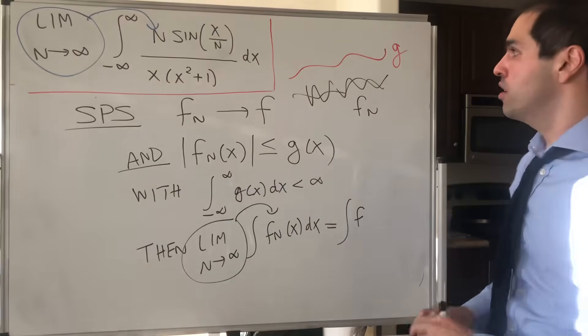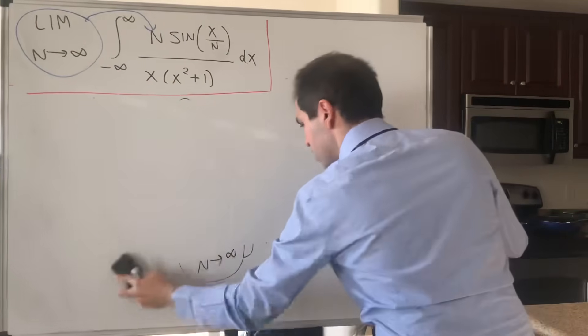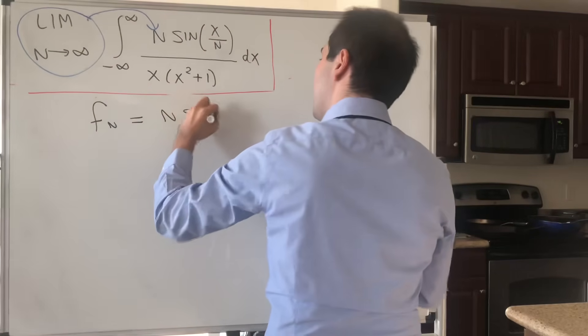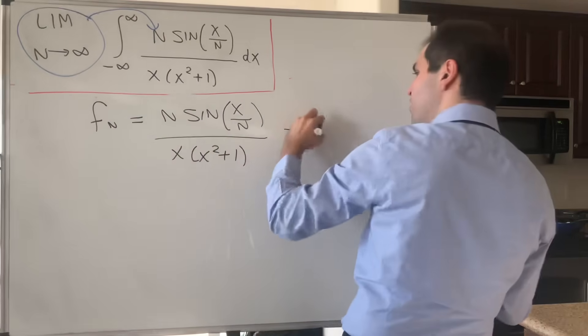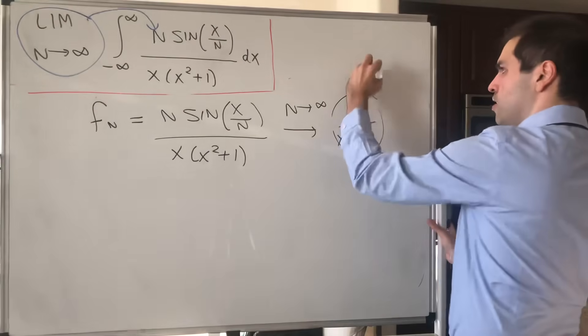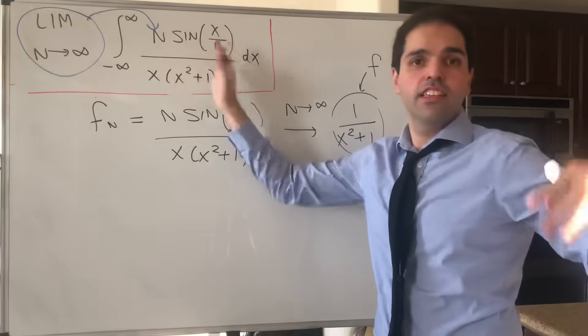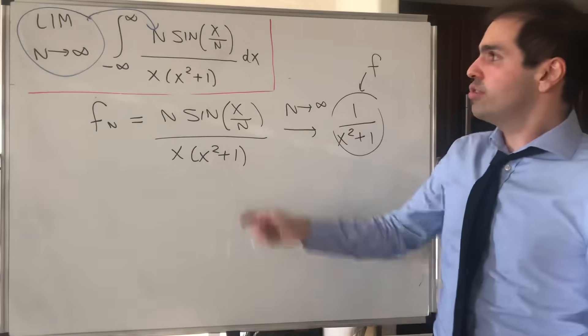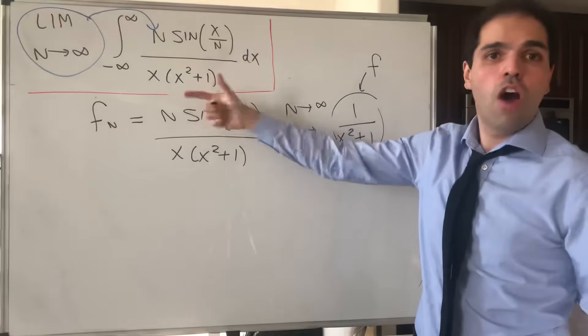And the beautiful thing is, we've done most of the work, because what have we found? We found this fn, which is n times sine of x over n, over x times x squared plus 1. We found that, pointwise, it converges to 1 over x squared plus 1. So that is your function f. And we cheated a little bit. We calculated the integral of the limit. We found it to be pi. So the only thing we still need to justify is to find a function that dominates all the fn's.